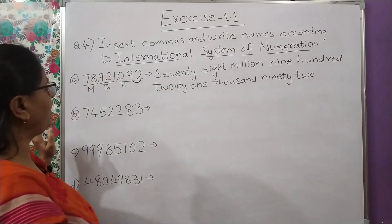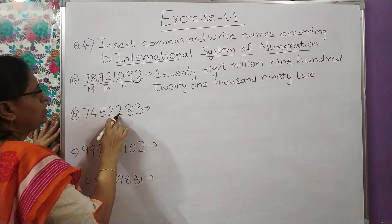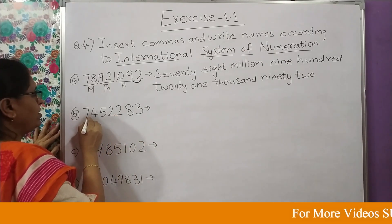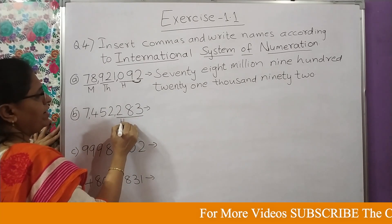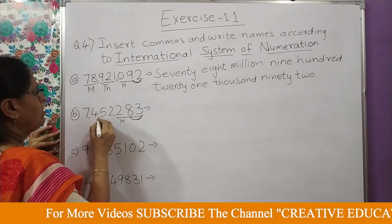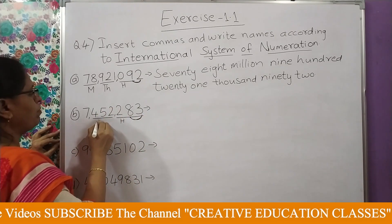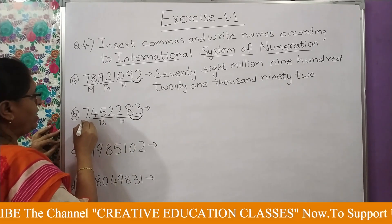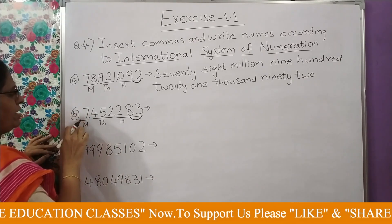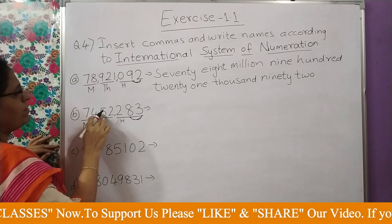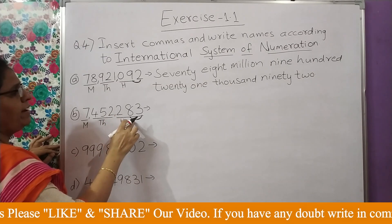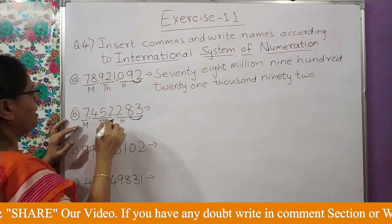Ab hum log next wala karenge. Ismein bhi same — one, two, three ke baad comma, phir one, two, three ke baad comma. Yeh teen saath mein hundred, yeh teen saath mein thousand, aur yahan ek bacha hai toh million. Toh: seven million, four hundred fifty-two thousand, two hundred eighty-three.